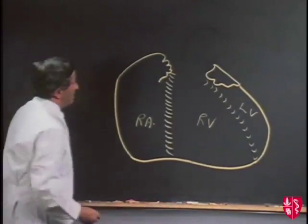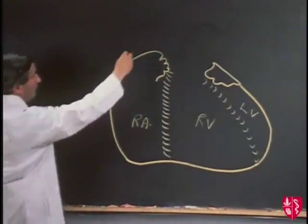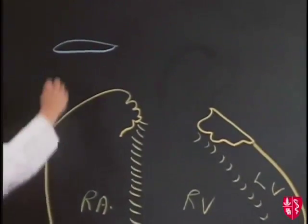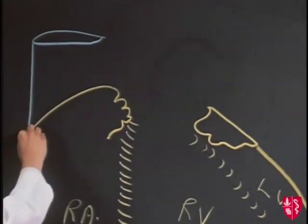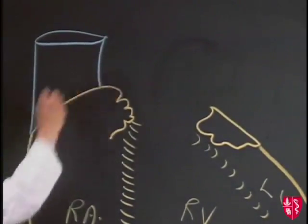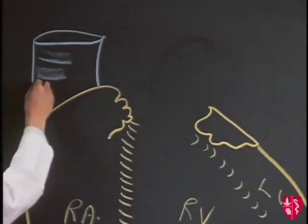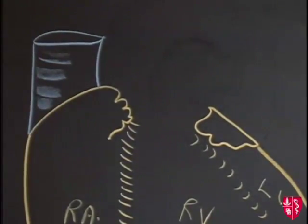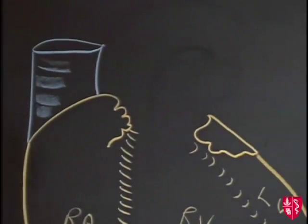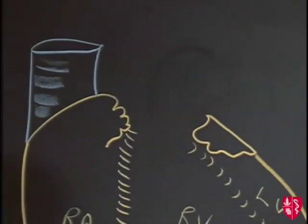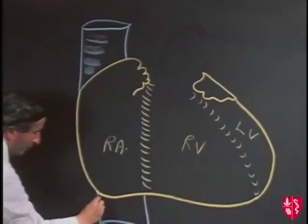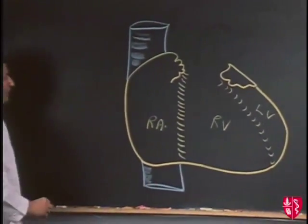I think we should put in the position of the large veins. We'll indicate here the cut upper end of the superior vena cava draining down into the right atrium, so that this is the superior vena cava. And coming up into the lower part of the right atrium, I'll show the cut lower edge of the inferior vena cava.